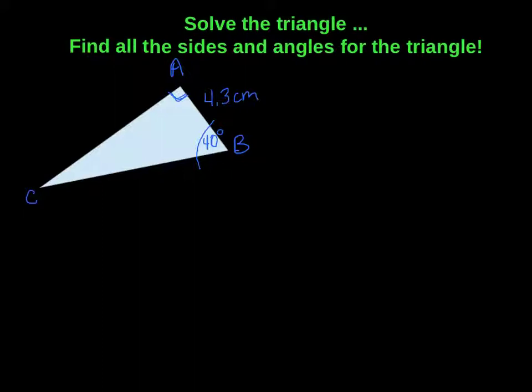Here's the question we're going to be working on. You notice that you're given one side, that's side AB right here, and you're given one angle. Your goal is to figure out what this side is over here, this side over here, and then this angle over here.